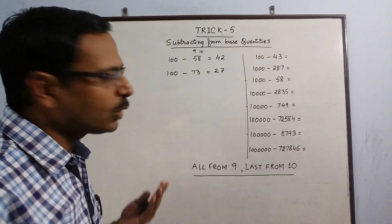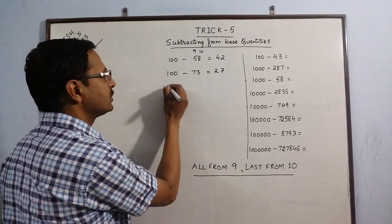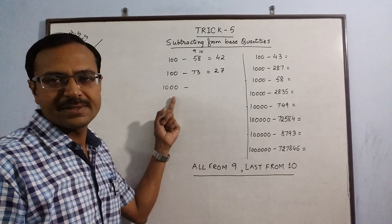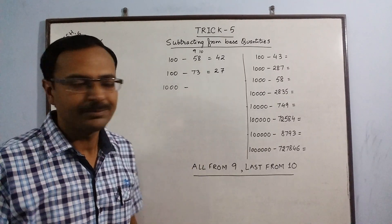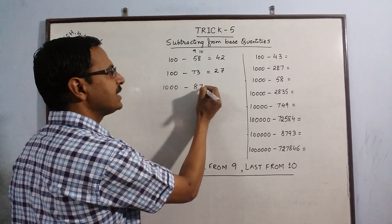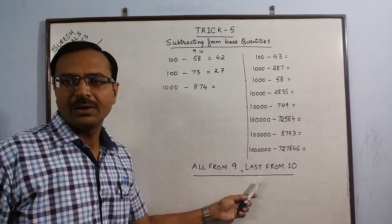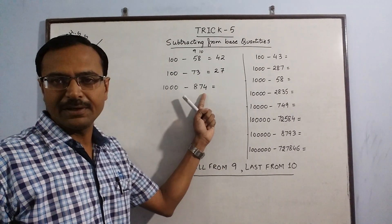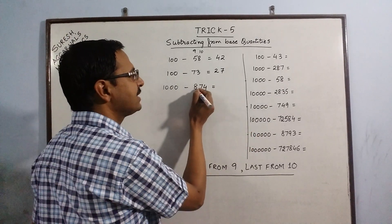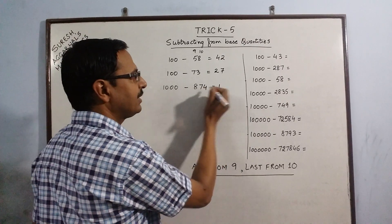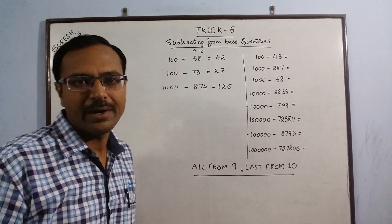Let us extrapolate this and have a bigger base quantity, say 1000. Now 1000 contains 3 zeros, so the number to be subtracted should be a 3-digit number. We are taking the number as 874. You can apply this rule directly because the number of zeros and the number of digits are equal. So: all from 9 and last from 10 — 9 minus 8 gives us 1, 9 minus 7 gives us 2, and 10 minus 4 gives us 6. So 126 is the required difference.